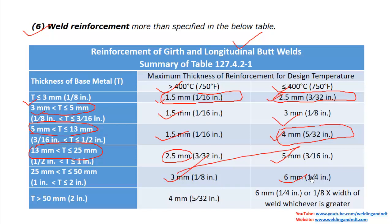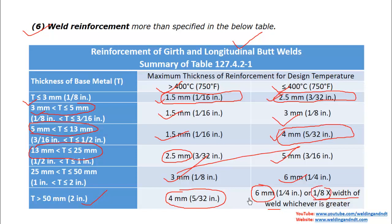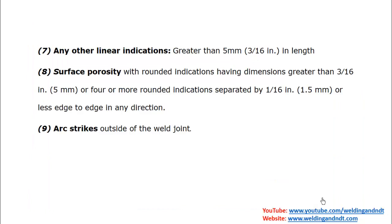For parent metal thickness greater than 50 mm, the maximum allowable reinforcement is 4 mm for pipes designed to work at temperatures greater than 400°C. If the pipe is designed to work at less than or equal to 400°C, the maximum reinforcement is 6 mm or 1.8 times the width of the weld, whichever is greater.